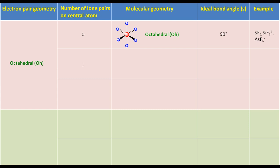For a molecule with octahedral electron pair geometry having one lone pair on the central atom, we will put the lone pair on the axial position because the number of electron pairs is even. Ignoring the lone pair will result in square pyramidal molecular geometry. The ideal bond angle is 90 degrees. IF5, SF5-, and SbF5 2- are examples of this type of molecule.